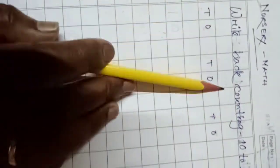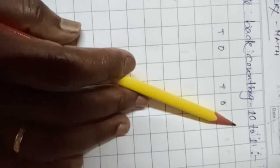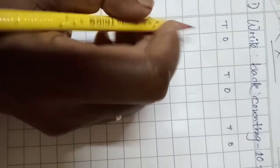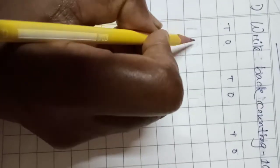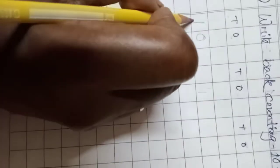Write back counting 10 to 1. So let's start. Ten: zero is in ones place, one is in tens place. Then you have to write nine. Nine is in ones place.